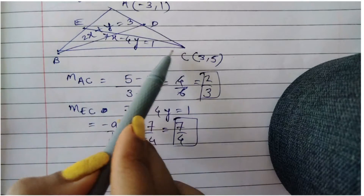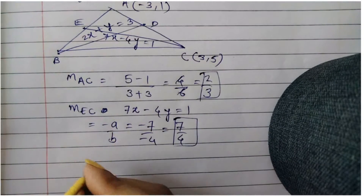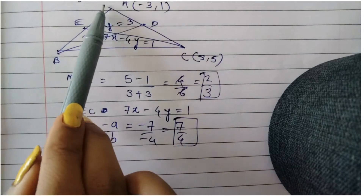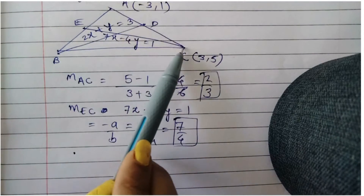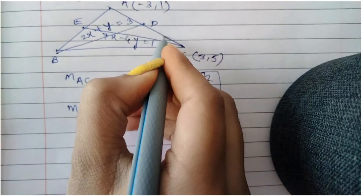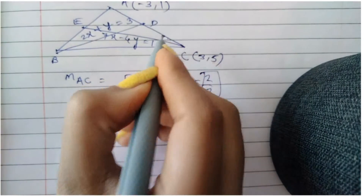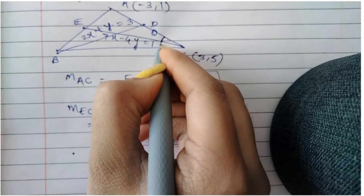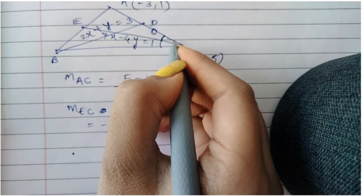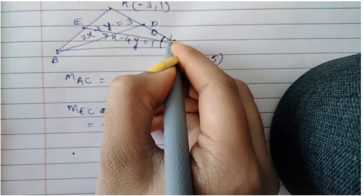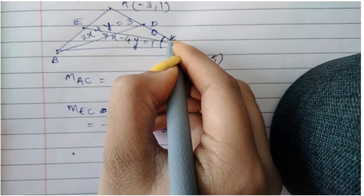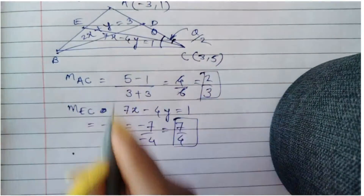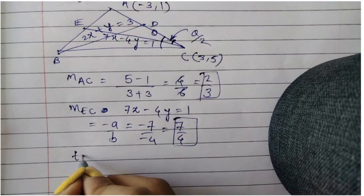Remember that they have given angle ACB = θ. We have found the slopes of AC and CE. The angle between AC and CE is θ/2 — the whole angle is θ and the angle bisector divides it, so this angle is θ/2.